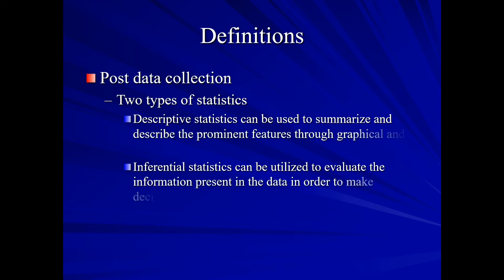There are two types of statistics that occur post-data collection. The first is a descriptive statistic, and these can be used to summarize and describe prominent features through graphical and numerical analysis. These are important. These will involve things like summary statistics and graphs. Our second type of statistic is called an inferential statistic, and we utilize this to evaluate our information present in our data in order to make our decision and conclusions. In other words, we're able to make a statement based off of the results of our decision and conclusion.